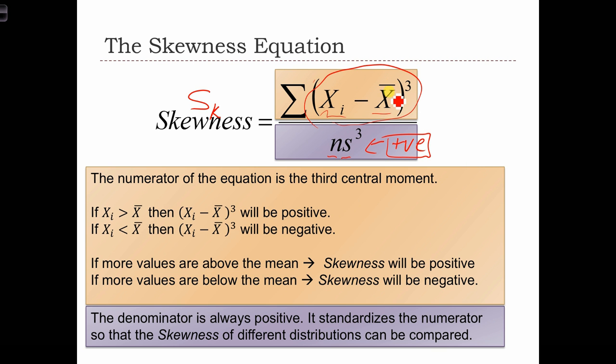So when we have more values below the mean than above the mean, the sum of all the cubed deviations is also going to be negative. And therefore, we're going to have some negative skew.